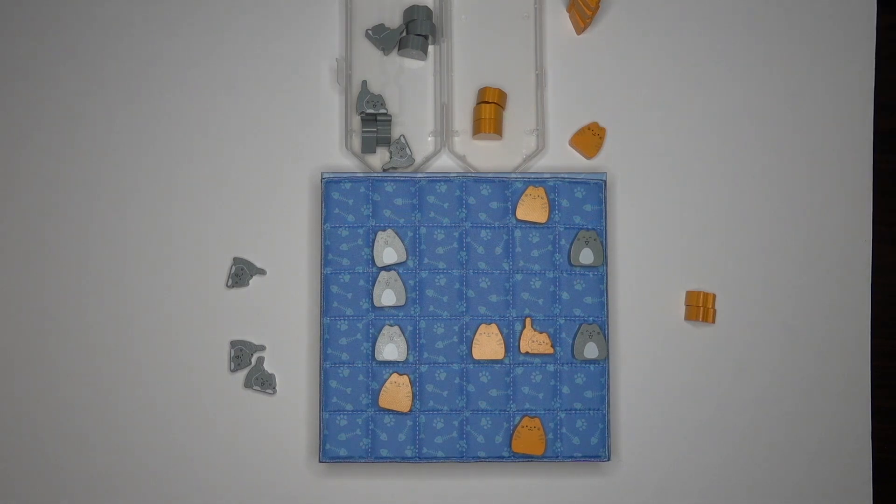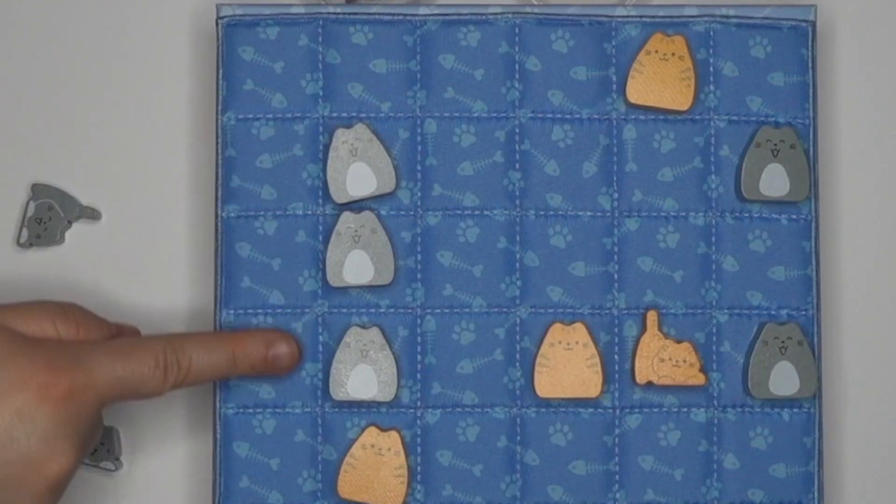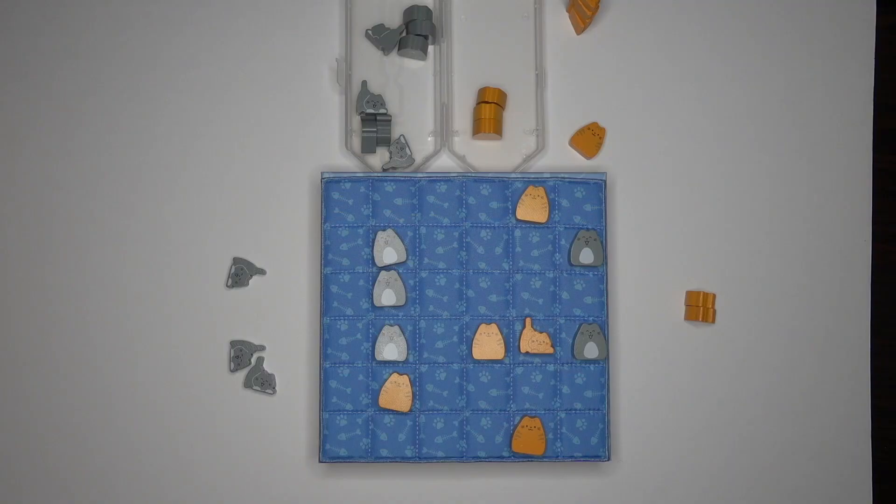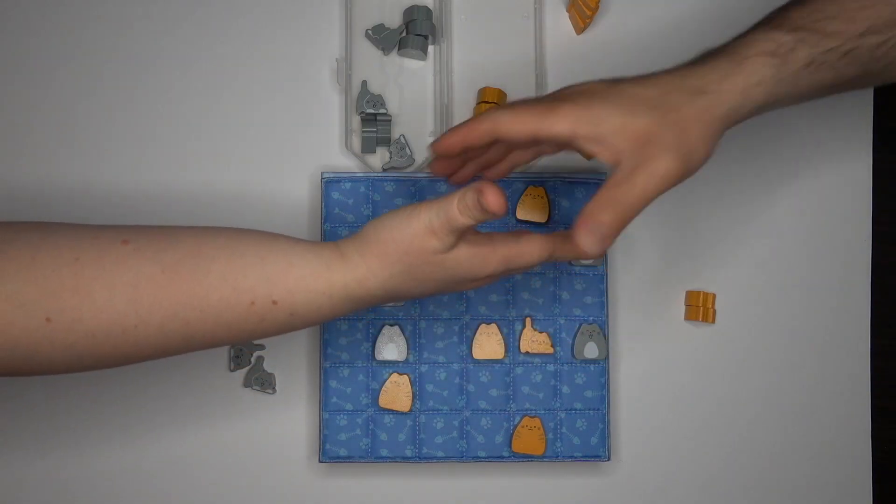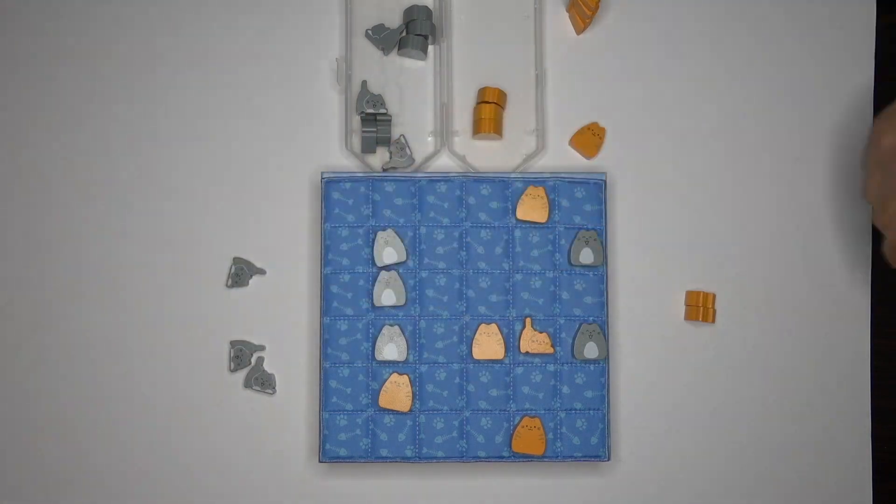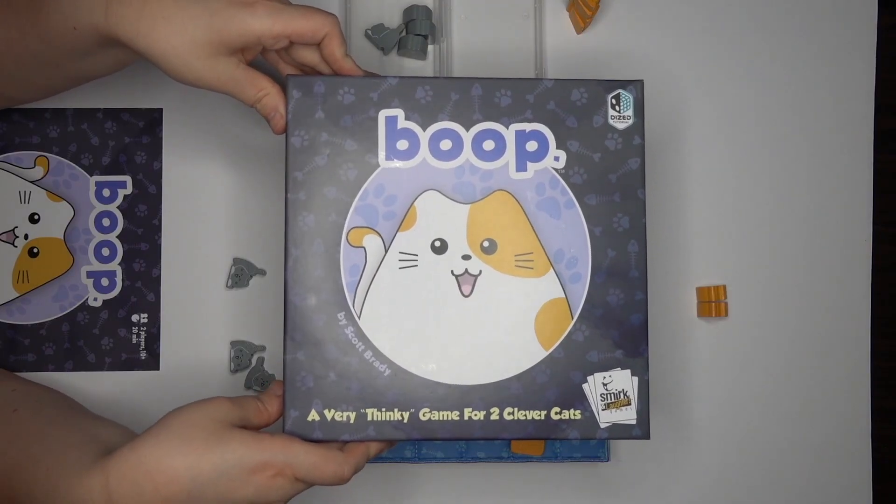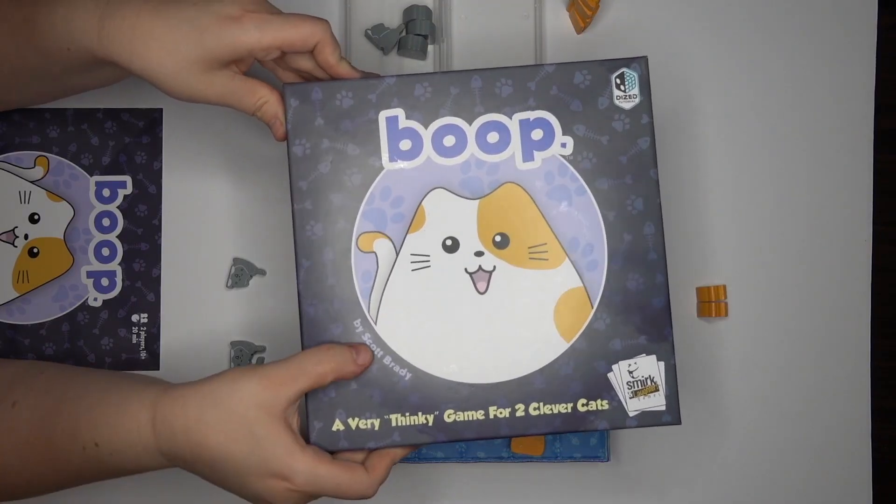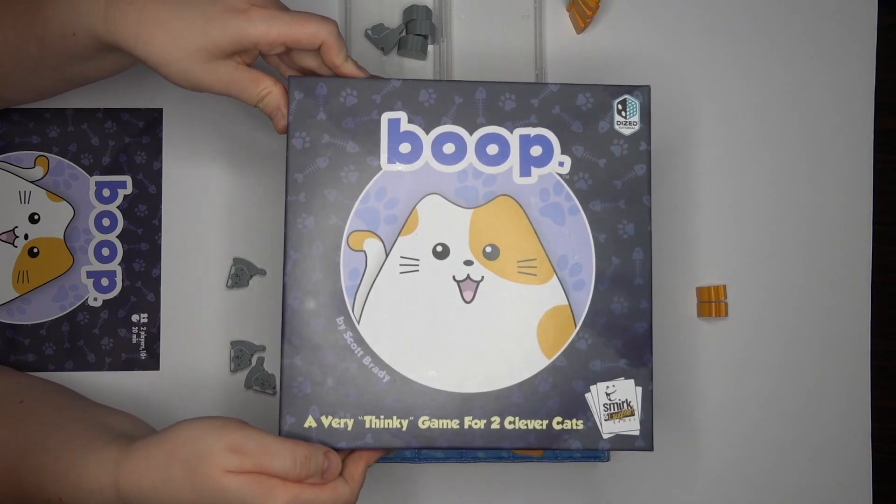Three in a row. So my chonky big boy cats have won the game. Oh, no. Outwitted by my hubris, I was so concentrating on getting more cats that I didn't notice your three in a row. And look how pleased they are with themselves that they're victorious. How nefarious. You and your self-interested cats. Good game, dear. But this has been Boop by Smirk and Laughter Games. Thank you, Scott Brady, for making this. It is cute and adorable.